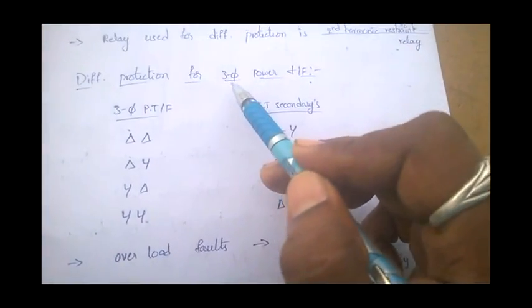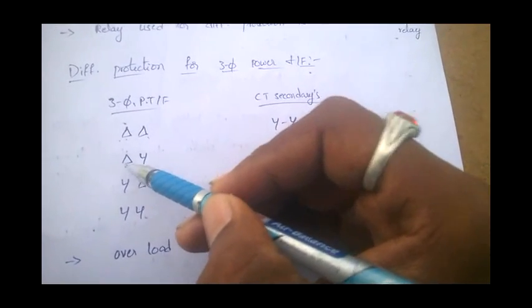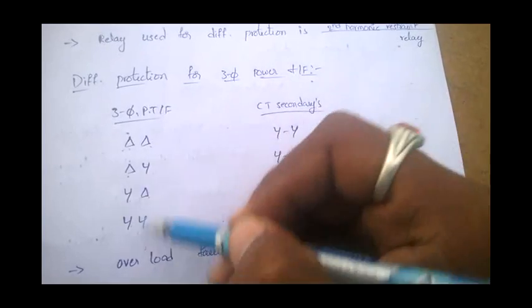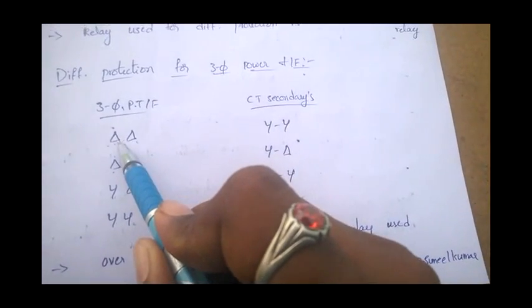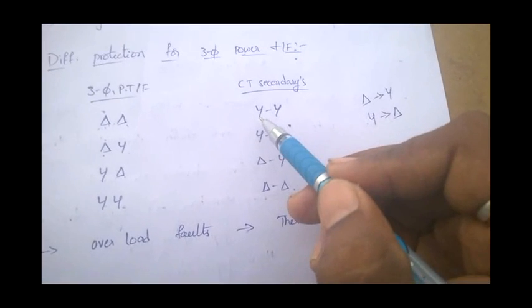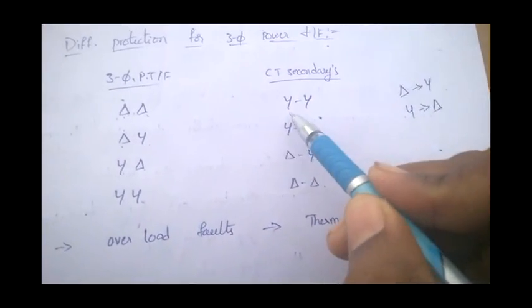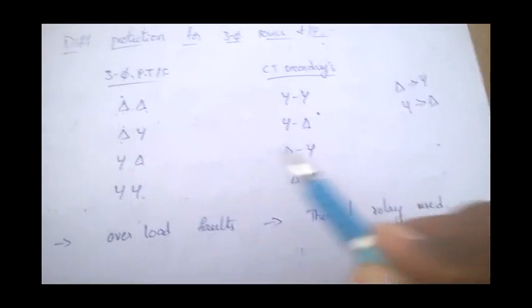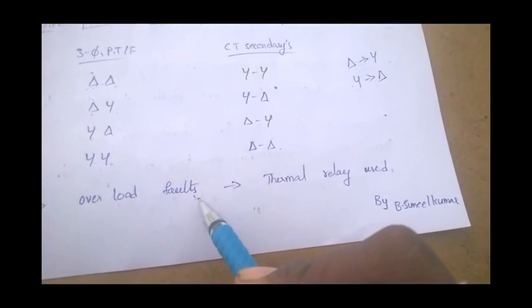For differential protection of a three-phase power transformer, the CT secondaries are connected in the opposite configuration to the transformer windings. That is, for delta winding, connect star-connected CTs; for star winding, connect delta-connected CTs. This opposite connection is used to protect three-phase power transformers. For overload faults in transformers, thermal relay is used.